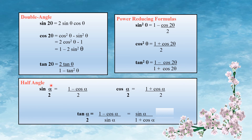Half angle formulas: sin(theta/2) equals square root of (1 minus cos theta) divided by 2. cos(theta/2) equals square root of (1 plus cos theta) divided by 2. tan(theta/2) equals (1 minus cos theta) divided by sin theta, or sin theta divided by (1 plus cos theta).